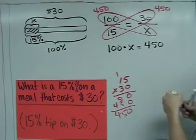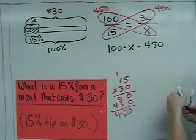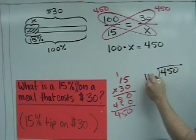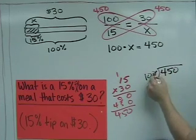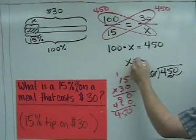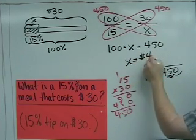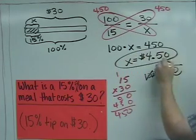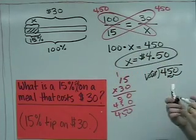So that means that 100 times something has to equal 450. Well, we can use a little bit of division to figure out what that X is. And we should know that when you divide by 100, you move the two decimal places over, so X is equal to 4.50. So the tip is $4.50.